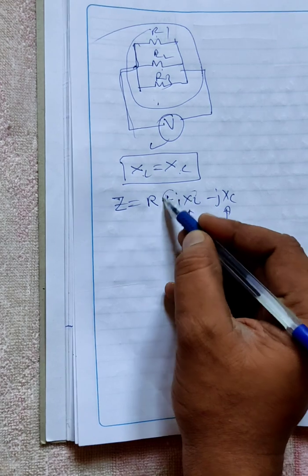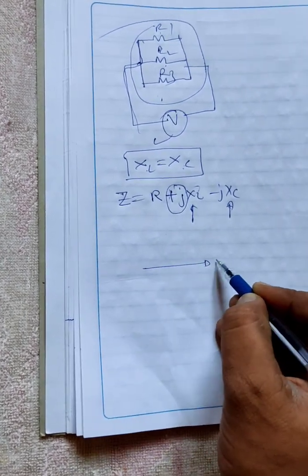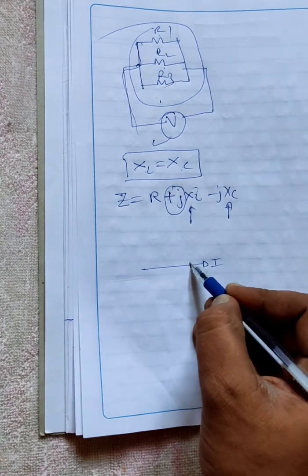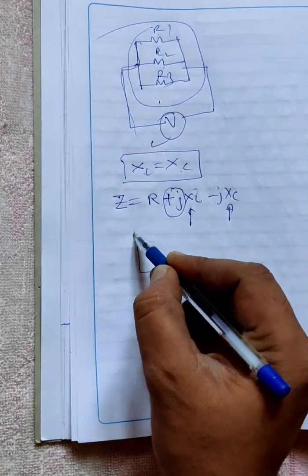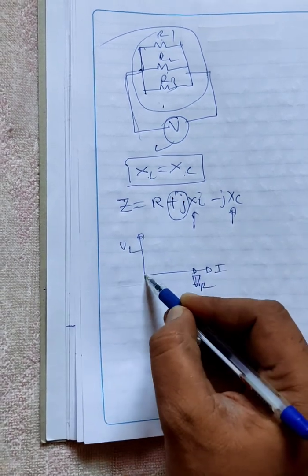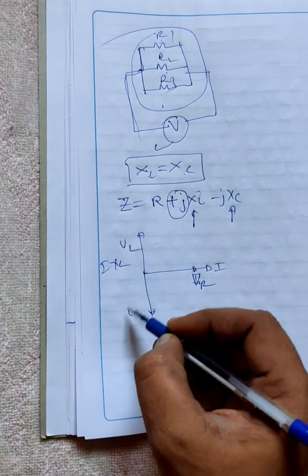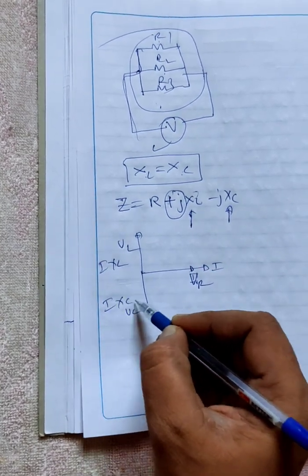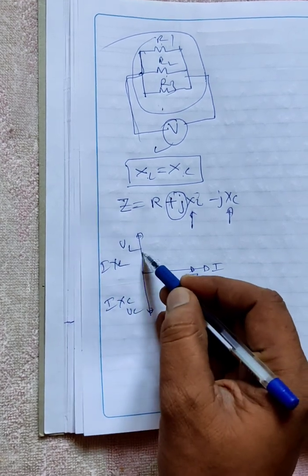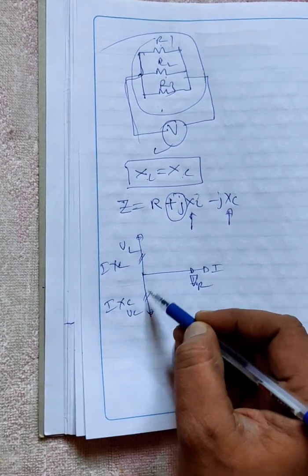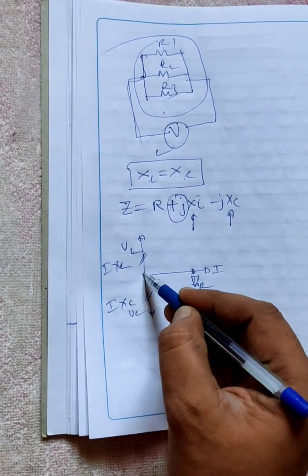XL and XC will be equal. However, XL comes under plus j imaginary axis. Let me take current, voltage drop across resistor is VR, voltage across inductor is VL, and voltage across capacitor is VC. VL is I into XL, VC is I into XC. If XL and XC values are equal, this is complete positive voltage and negative voltage both having equal and opposite magnitude, so they cancel each other and finally you will get zero.